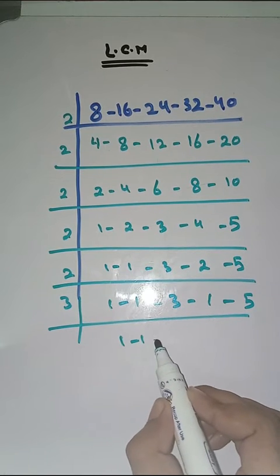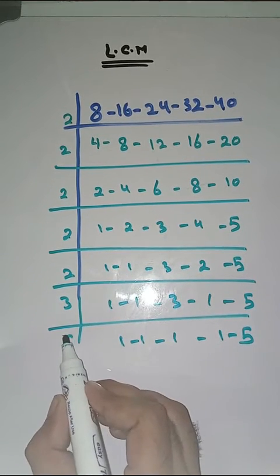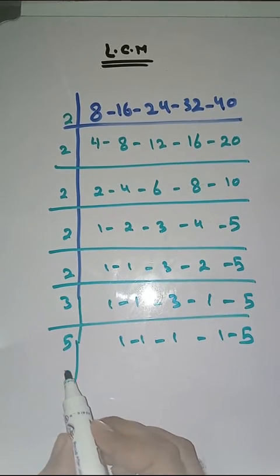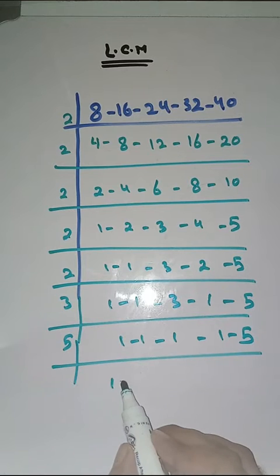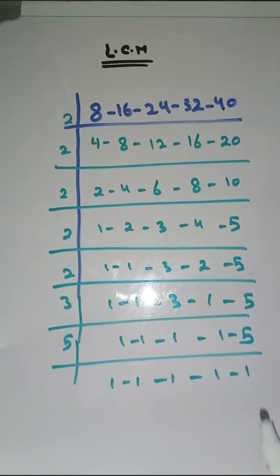Now with 3: 3 ones are 3, 5 as it is. Now with 5: 5 ones are 5.